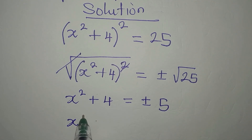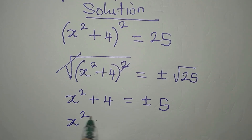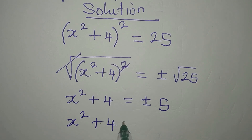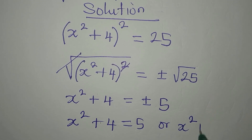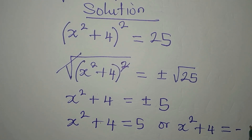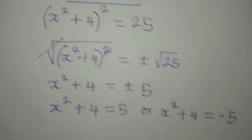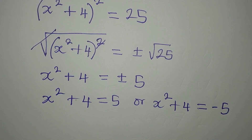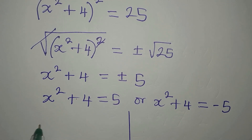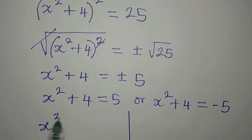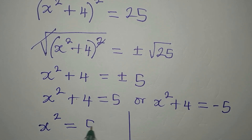x² + 4 is equal to plus or minus the square root of 25, which is 5. Mind you, we have two solutions. So we have two equations: x² + 4 = 5, or x² + 4 = -5.